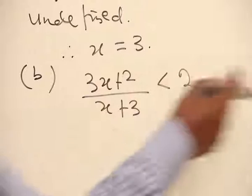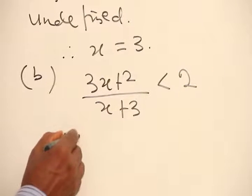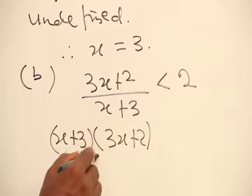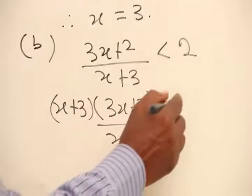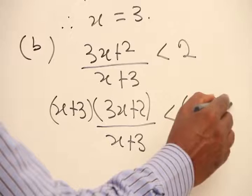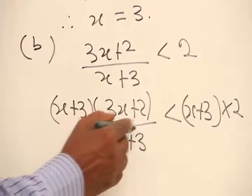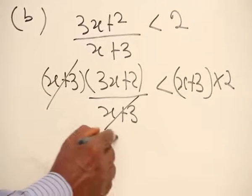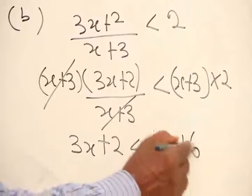We can multiply both sides by s plus 3. So s plus 3 multiplying 3s plus 2 all over s plus 3 will still be less than s plus 3 multiplying 2. This s plus 3 and this one will cancel, leaving 3s plus 2. Then multiply this out: that is 2s and then plus 6.